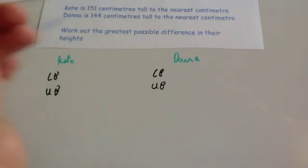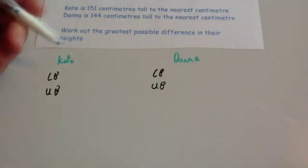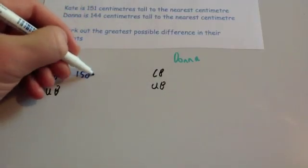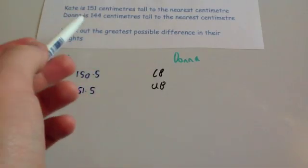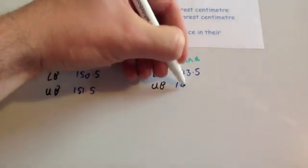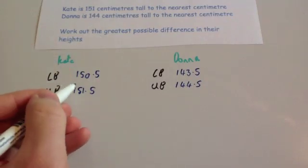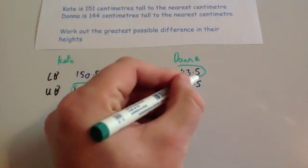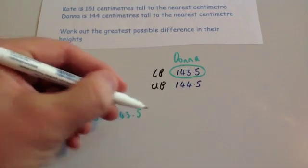Kate is 151 centimetres tall to the nearest centimetre. Her lower bound is 150.5 cm and her upper bound is 151.5 cm. Donna is 144 centimetres tall to the nearest centimetre, so her lower bound is 143.5 cm and her upper bound is 144.5 cm. The question asks for the greatest possible difference in their heights. A difference means we subtract, and for the biggest possible answer we take the biggest number minus the smallest: 151.5 subtract 143.5, which gives 8 centimetres.